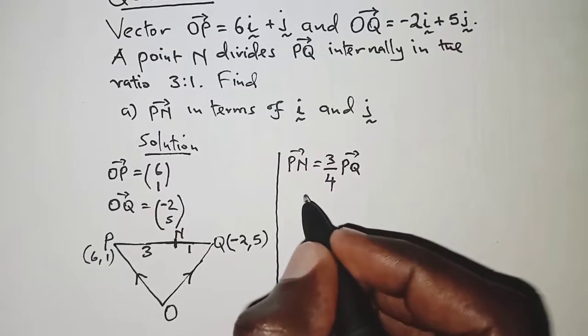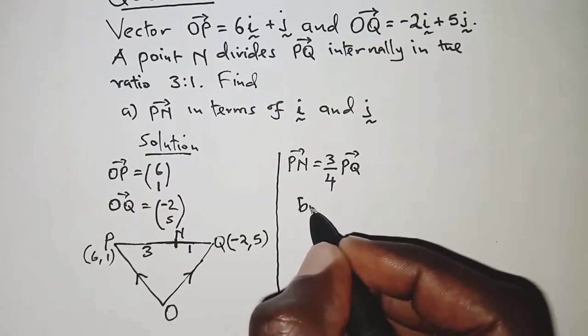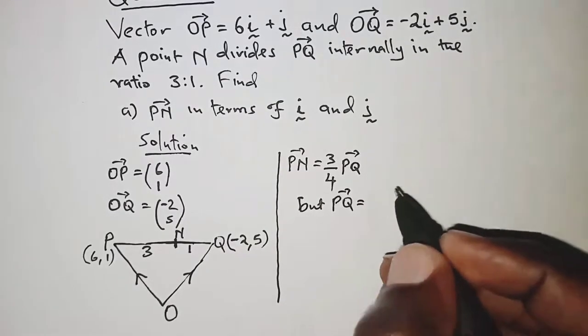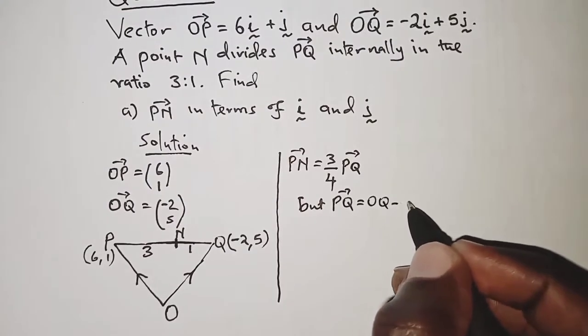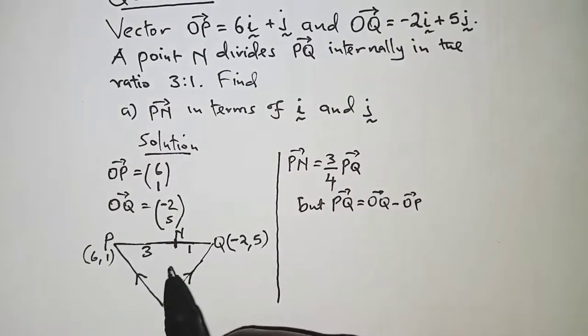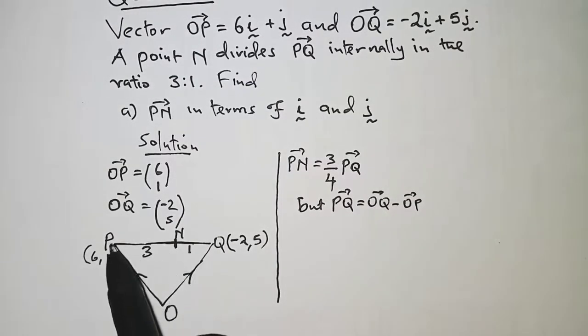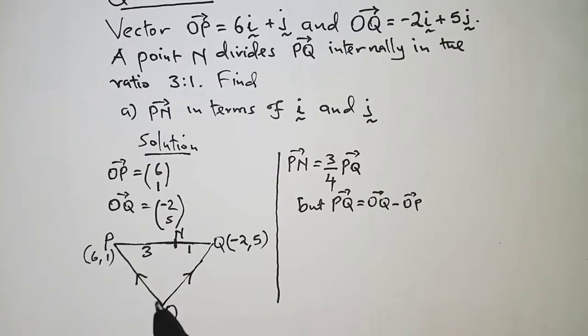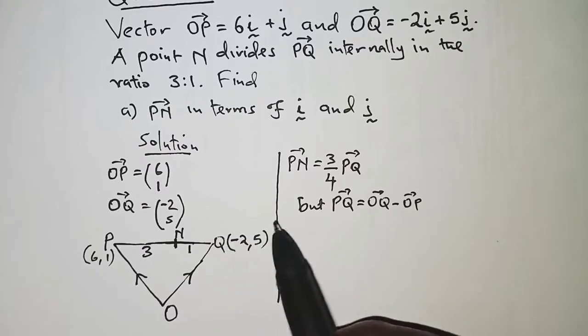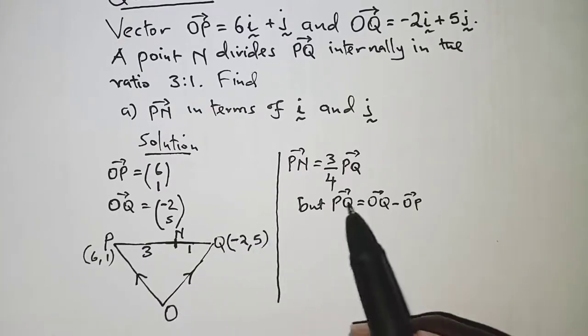So from here, we can say that PQ is simply OQ minus OP. Just to explain this a bit, PQ simply means moving PO plus OQ, but PO is against the direction of OP, and therefore we have it as negative OP, and that is what we have right here. And then OQ is just the direction of OQ, so it's the positive one.